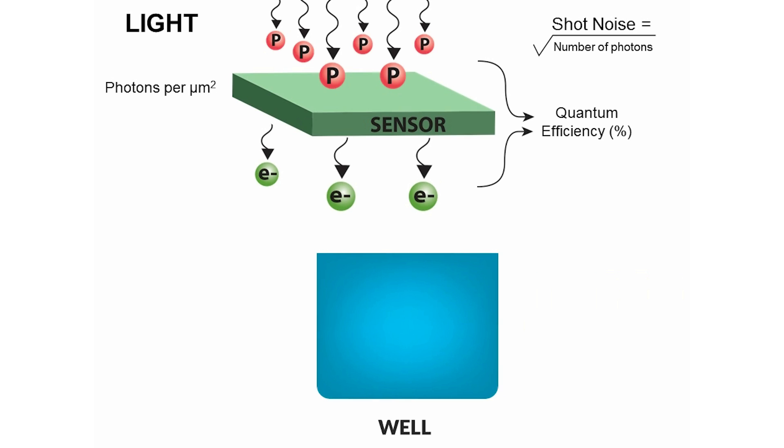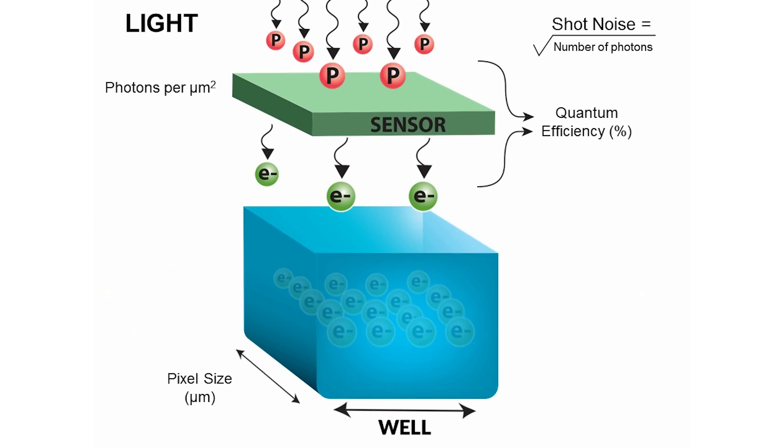It's really important to remember that it's actually an area. So now we've got our pixel size, which is expressed in microns, and then we've got some electrons getting caught in there.